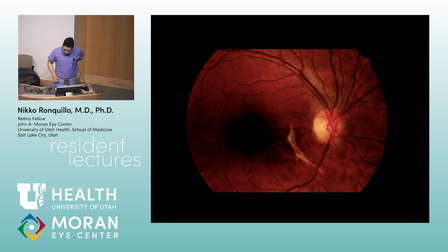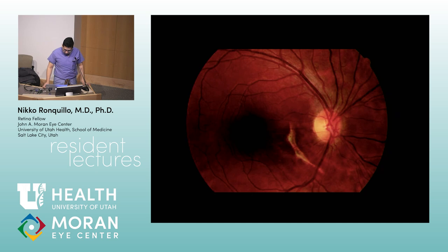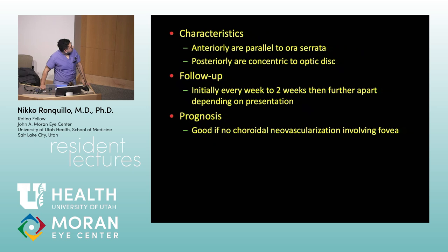Next image — this is choroidal rupture. That crescent right there around the optic nerve is where it's typically located in trauma — concentric to the optic nerve. Anteriorly, choroidal ruptures are parallel to the ora serrata.